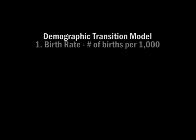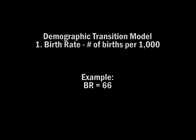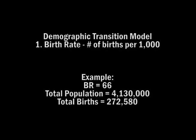The demographic transition model shows the interaction between three variables over time: birth rate, death rate, and the rate of natural increase. Birth rate is the number of births per 1,000 people a country has per year. It is not a percentage and it is not a total number of births. If a country's birth rate is 66, that means for every 1,000 people in a country, 66 babies are born in a particular year.